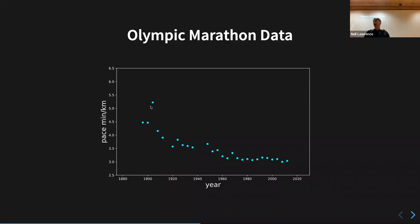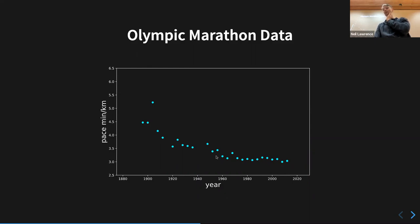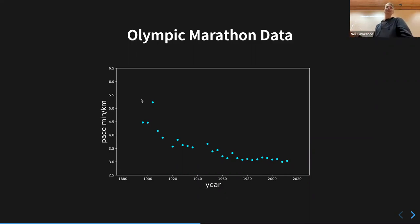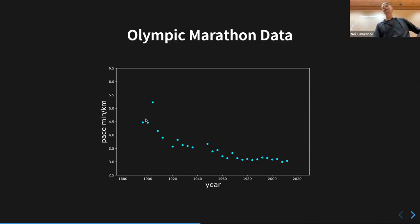We've had other marathons since then. Now what I also like about this data is it's got this outlier. The marathon times over time are improving, but things happen because of the First World War and the Second World War. Carl Henrik and I have both run marathons and we're probably up around the four-and-a-half minute-per-kilometer pace. The question is: is this a good model of the Olympic running time? No — it's not at all. And the outlier here is particularly interesting.